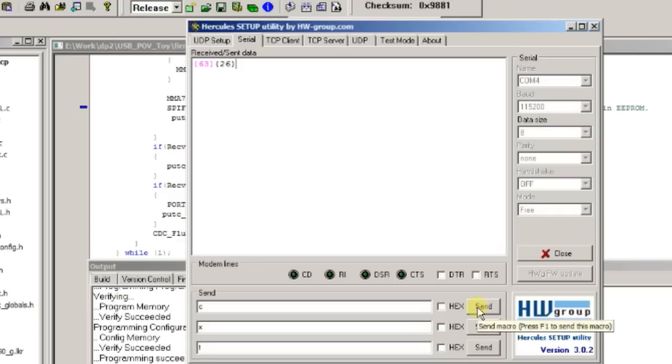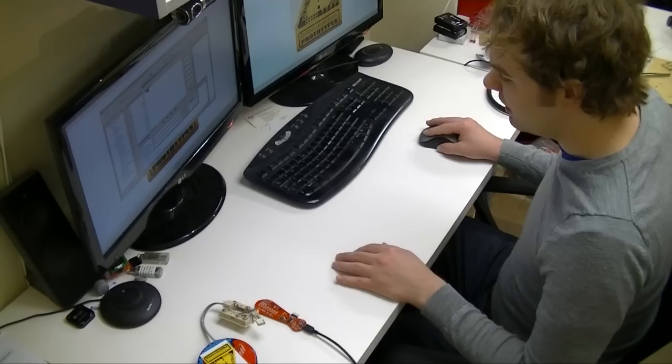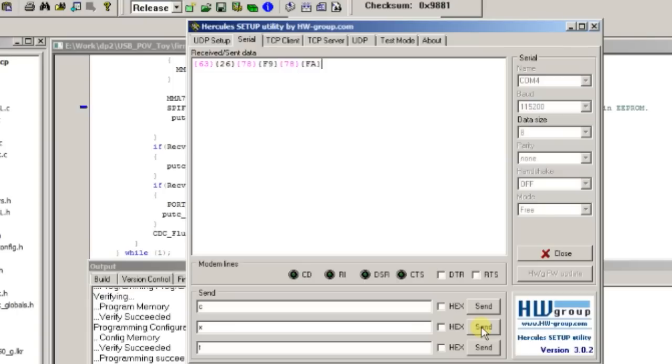The calibration routine ran and decided we were 26 hex off from 0. So now it programmed that into the EEPROM as well as the accelerometer. So now when we take another x-axis measurement, it should be much closer to 0 or FF. You see now it's FA, F9. Those are all very acceptable values.